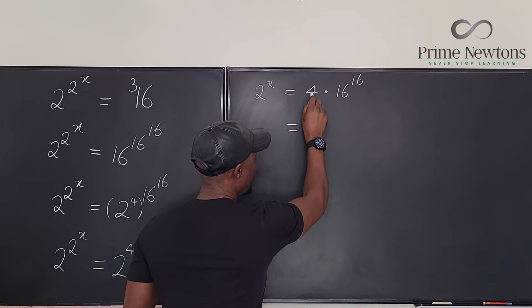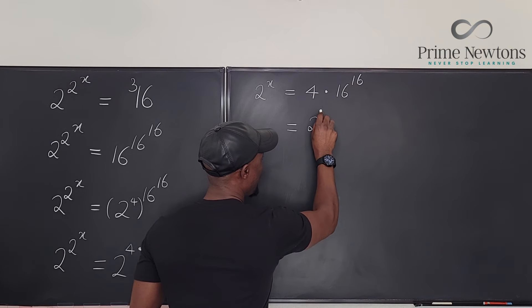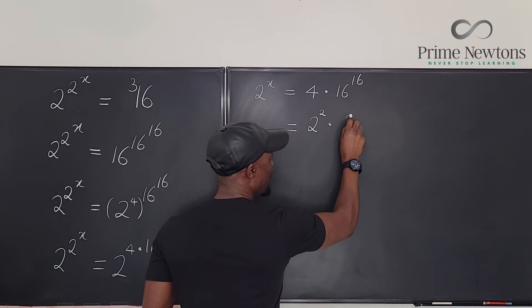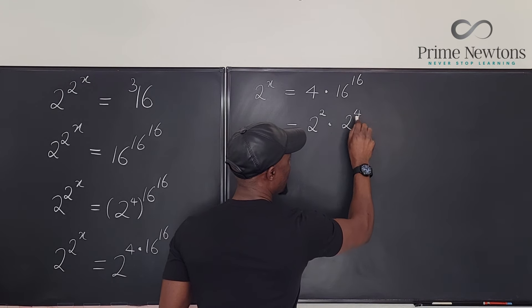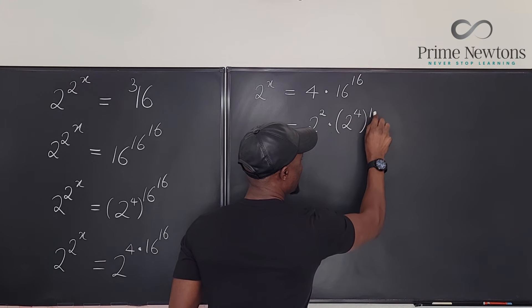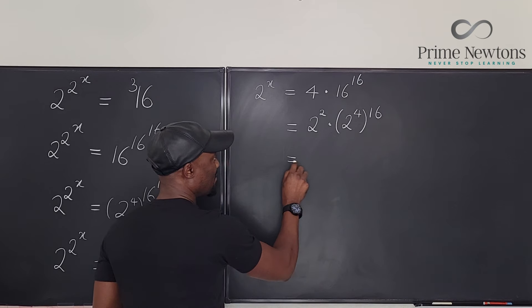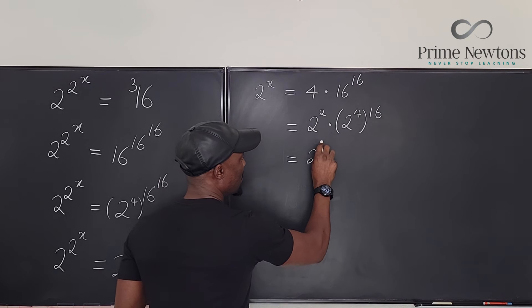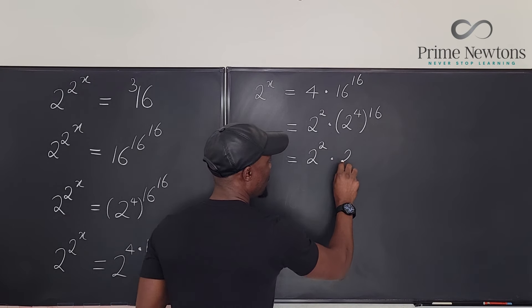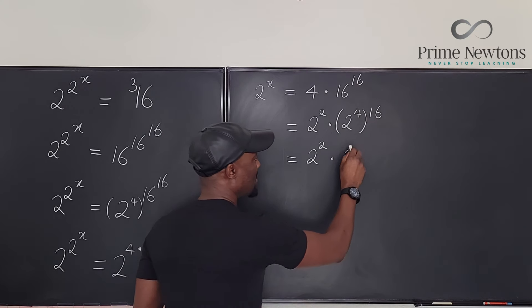I just have to say this 4 can be written as 2 squared and I just have to say this 16 can be written as 2 to the 4th raised to power 16. Apply the laws of exponents. I'm going to get 2 to the 2nd multiplied by 2 to the, apply that law, 4 times 16 is going to be 64.